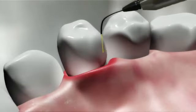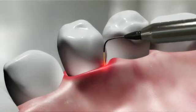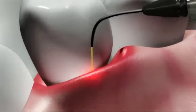After completing a gross debridement of the treatment area, the ND YAG laser is used to remove the diseased epithelial lining to within 1 mm of the bottom of the pocket.